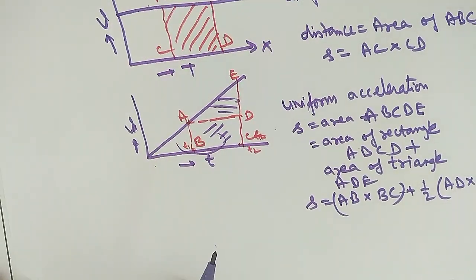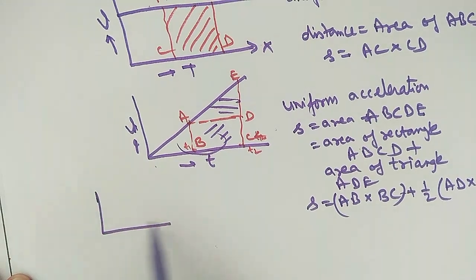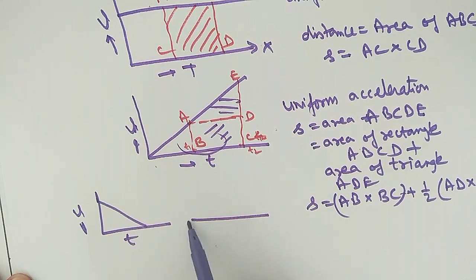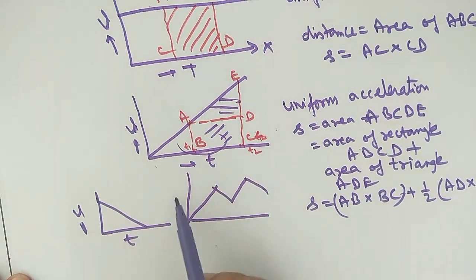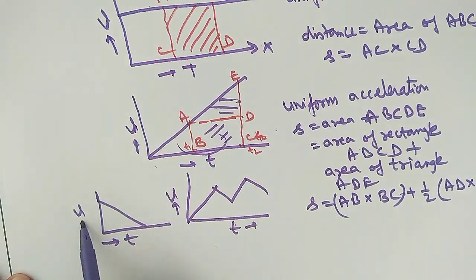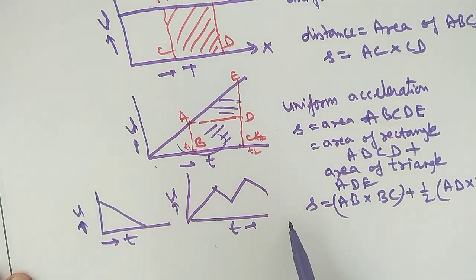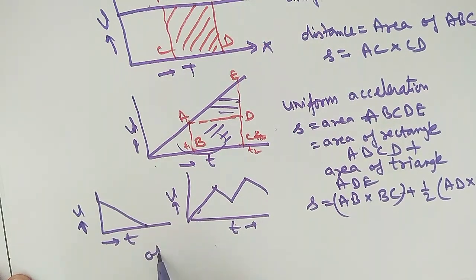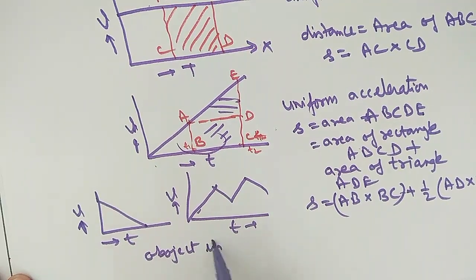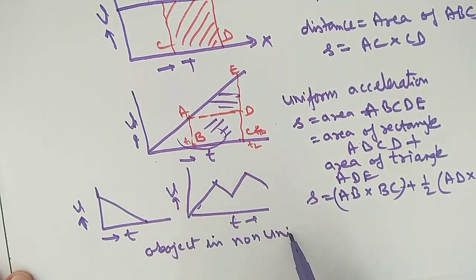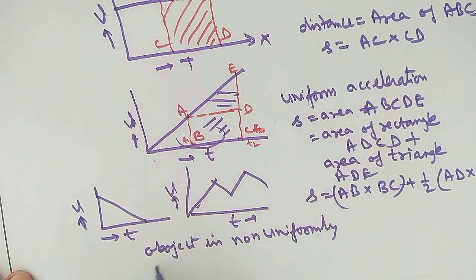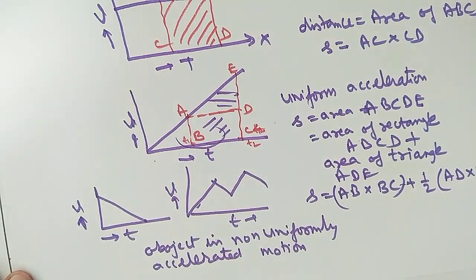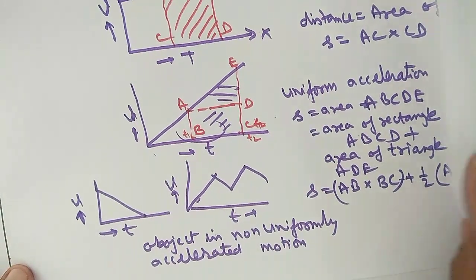Some different types of VT graphs also exist. For example, if the graph is a curve — either increasing or decreasing — then the rate of change of velocity is not constant. These curved VT graphs represent non-uniformly accelerated motion.